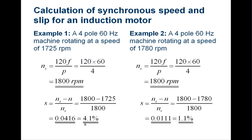Similarly, a four-pole 60 Hz machine rotating at 1780 RPM will result in a slip of 0.0111, which is about 1.1%.